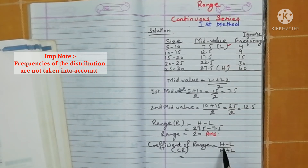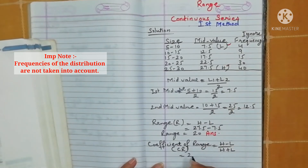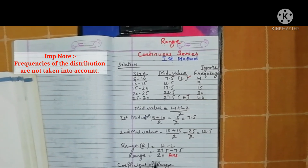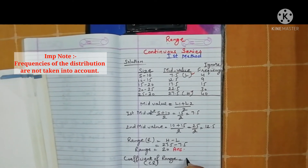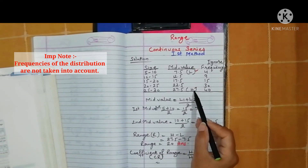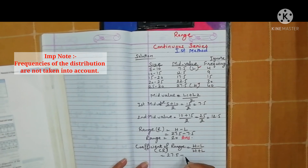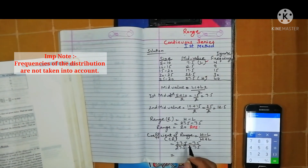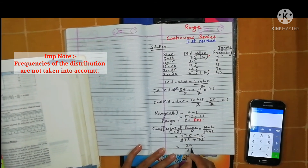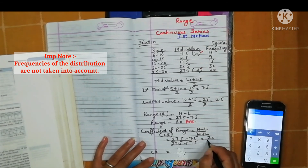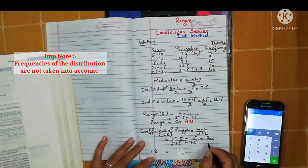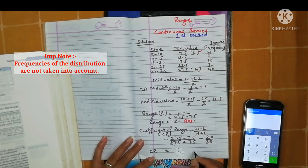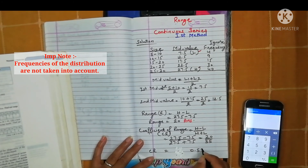Next, we find the coefficient of range. The highest mid value is 27.5 and the lowest mid value is 7.5. The formula gives us: (27.5 minus 7.5) divided by (27.5 plus 7.5) = 20 divided by 35 = 0.57. That is the coefficient of range.